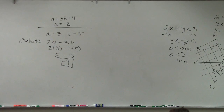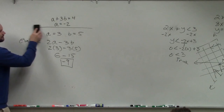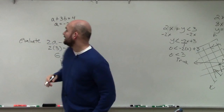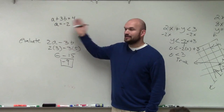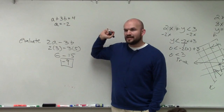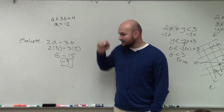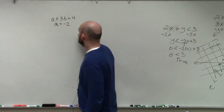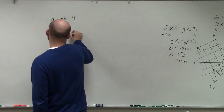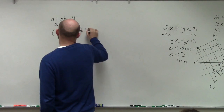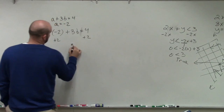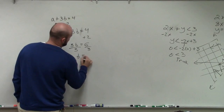So now the equation I'm going to go over is a plus 3b equals 4, and they say a equals negative 2. I plug negative 2 in for a: negative 2 plus 3b equals 4. Now I solve for b — I add 2 on both sides, getting 3b equals 6, divide by 3, so b equals 2.